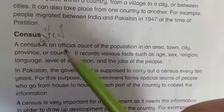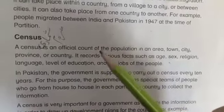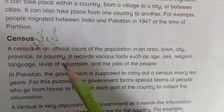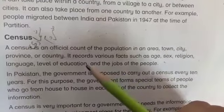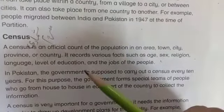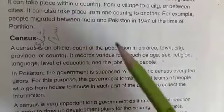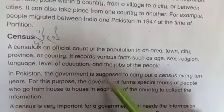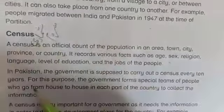اس میں languages جیسے بلوچی، انگلیش، پنجابی وغیرہ، level of education — مثلاً middle میں ہیں، higher secondary میں ہیں، چھوٹا بچہ nursery یا prep میں ہے — اور ان کے jobs کے بارے میں۔ جب حکومت یہ مردم شماری کراتی ہے تو اسے census کہتے ہیں۔